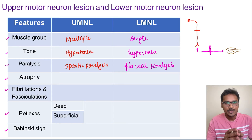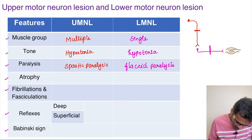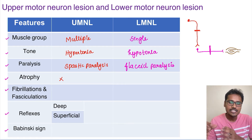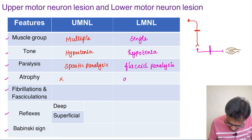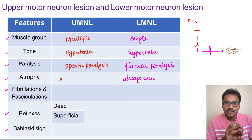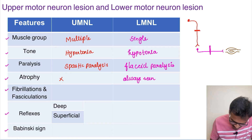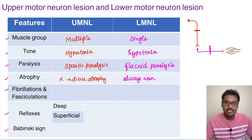Coming to atrophy, which is the shrinkage of the muscle. In upper motor neuron lesion, the lower motor is still innervating the muscle, so the chances of atrophy are very minimal — atrophy is not usually seen. Whereas in lower motor neuron lesion, atrophy is almost always seen. In upper motor neuron lesion, if the person is not using the muscle for a prolonged period, it can cause disuse atrophy.